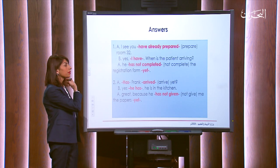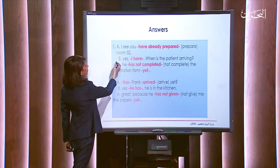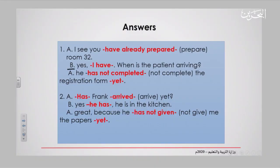Let's check the answers together. Starting from B: 'Yes, I have. When is the patient arriving?' Then A: 'He has not completed the registration form yet.' Why 'has' and not 'have'? Because the subject is 'he' — singular. So: 'He has not completed the registration form yet.' Again, 'yet' must come at the end of the sentence.